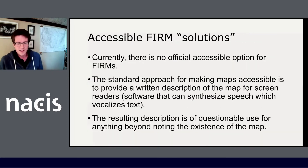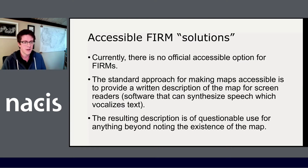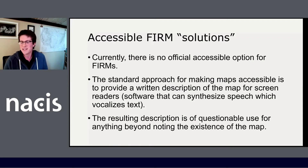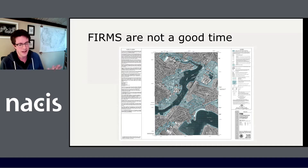This is kind of difficult. There's no official accessible format for these maps. The standard approach at the moment is to provide a description of the maps, either alt text or a separate written description on a document somewhere, but of course that can be kind of difficult and problematic. This is an example of a FIRM. These are pretty big maps — full size they're about 36 inches wide. We have a legend with a couple of dozen entries on it, satellite imagery, and an extensive note section — that's just text. But there's a whole lot going on in these images.